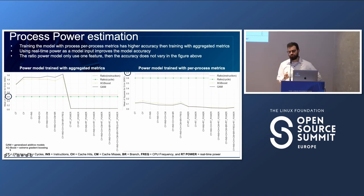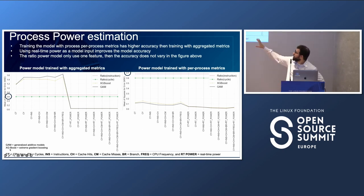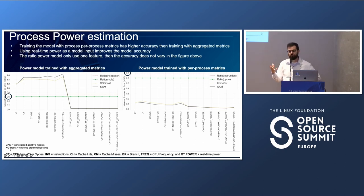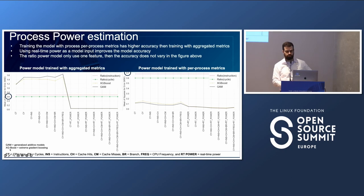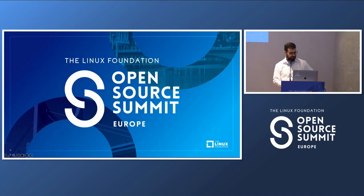We also tested the accuracy of power models using different input metrics — such as CPU time versus hardware counters — and evaluated different regression algorithms to find which yields the best accuracy for the power model used in production. This analysis is part of a research paper published this year in IEEE Cloud. We have about five minutes for questions.